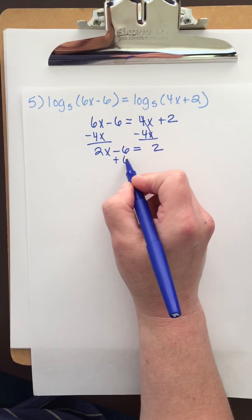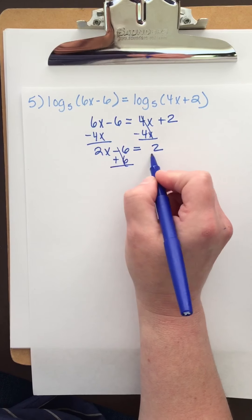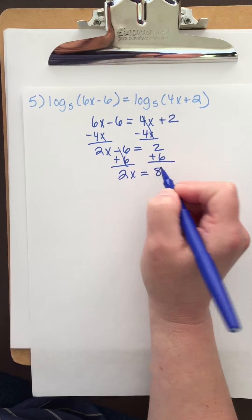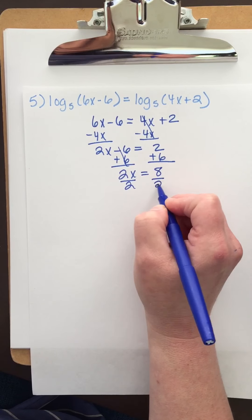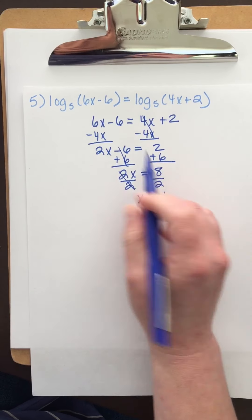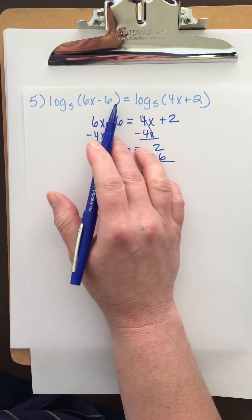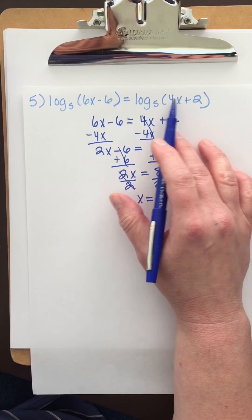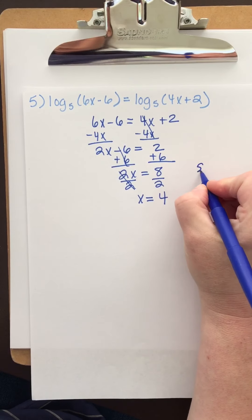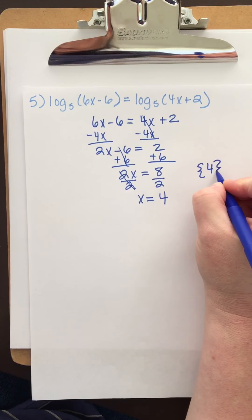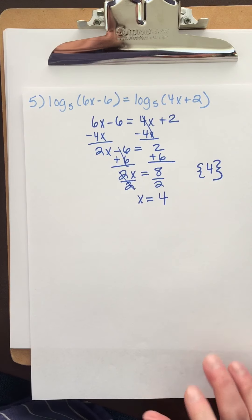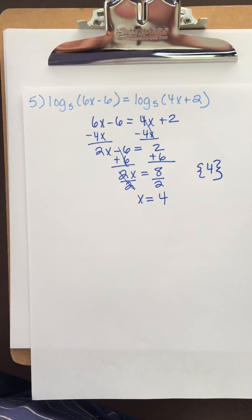To get rid of the minus 6, I'm going to add 6 to both sides. So I get 2x equals 8. To undo multiplication, we divide. And I get x equals 4. Checking: that'd be 24 minus 6 and 16 plus 2 — fantastic. So my solution is 4. All right, that's it. Have a wonderful rest of the day.